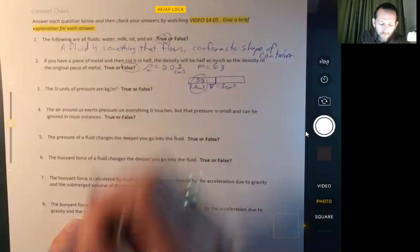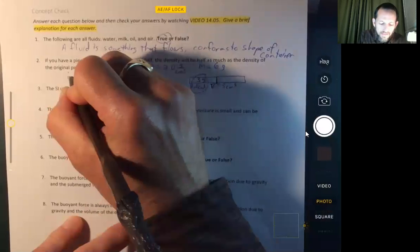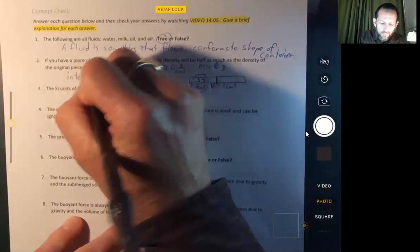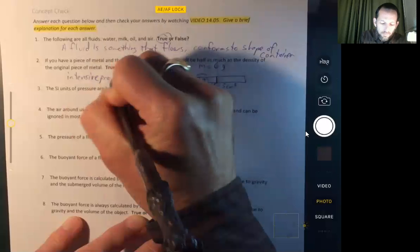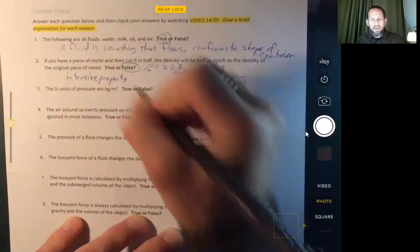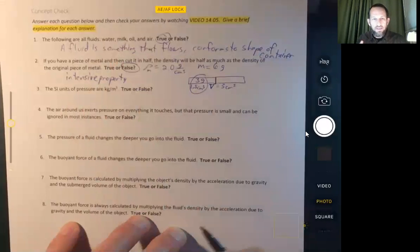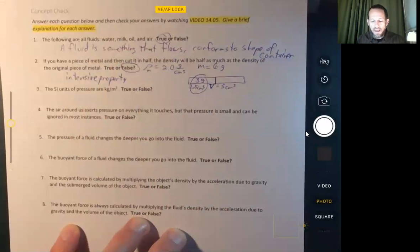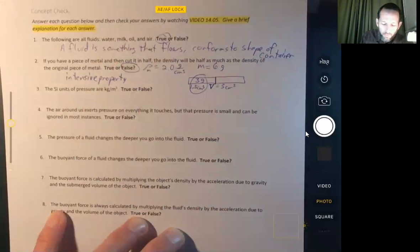So density is an intensive property, which means it doesn't matter how much of the substance there is. An extensive property is going to depend on how much of the substance there is. Both mass and volume are extensive properties, but density is an intensive property. All right, next one.